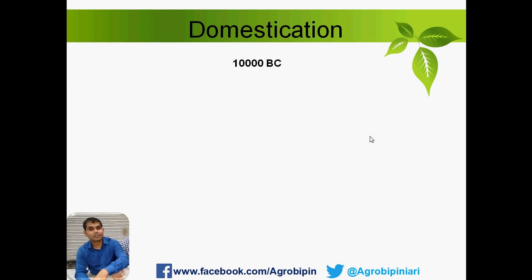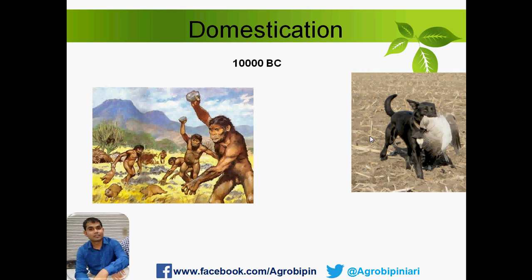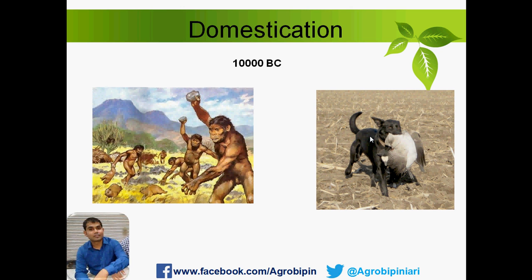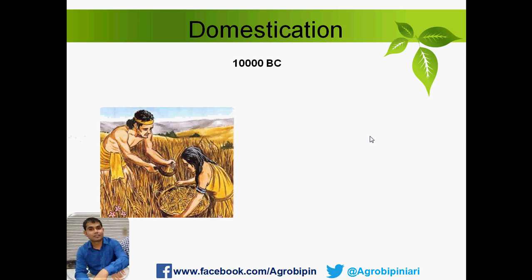Before 10,000 BC, there was no concept of agrobiodiversity because man was totally relying on hunting as a source of food. But later on, they started to face needs, and they realized that some animals could assist in hunting other animals — so they started to domesticate the dog first.